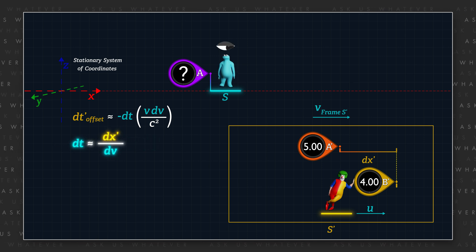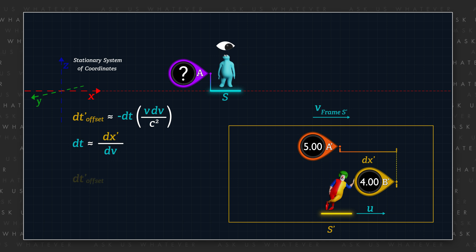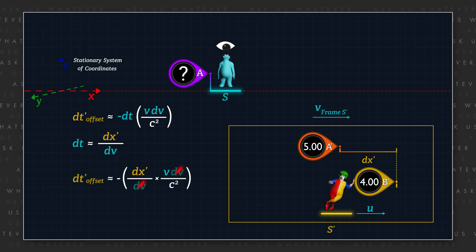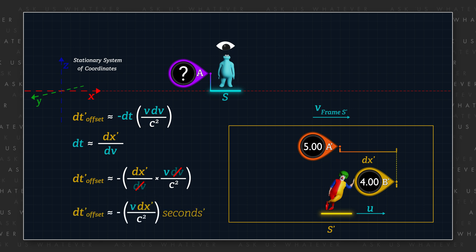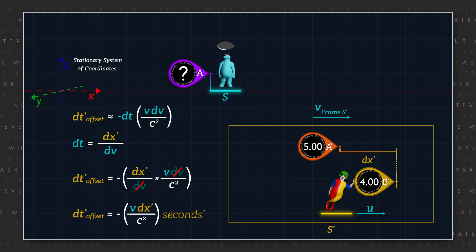This is not strictly correct on a unit analysis basis, but when V is small relative to C, such that the Lorentz Gamma factor is nearly equal to 1, it's a close approximation.